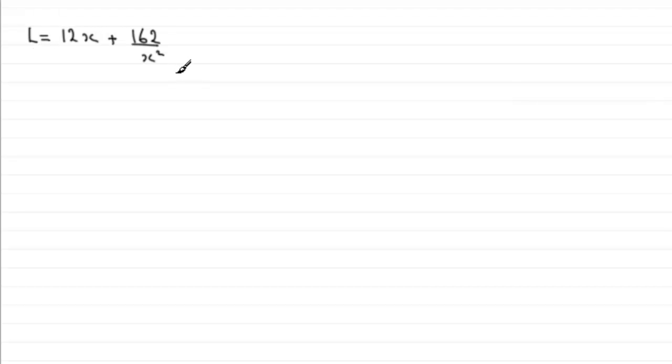Now if we're to differentiate this, we need to change this term. We need to rewrite it as 12x plus 162x to the power minus 2, because it's 162 times 1 over x squared, so we can rewrite that as x to the minus 2.